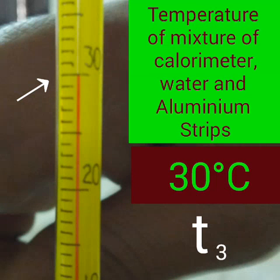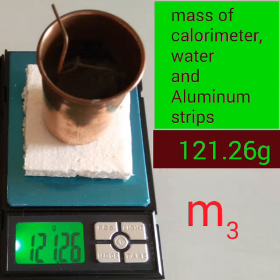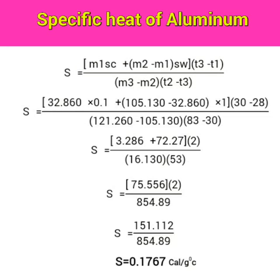Now the calorimeter is taken out and its mass along with the water and aluminum strips is recorded as M3. All the values recorded — M1, M2, M3, T1, T2, and T3 — are substituted in the formula.